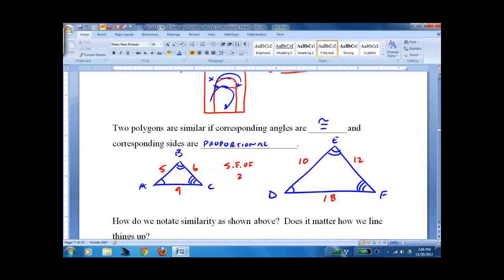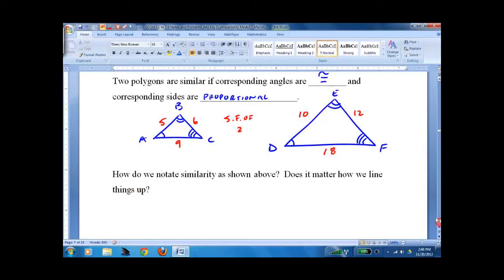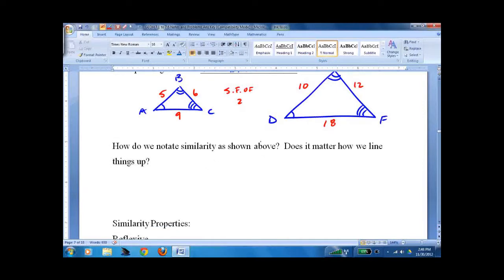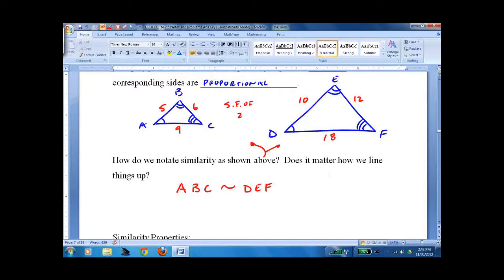That's pretty much it. That's how it works. It's not that hard, I hope. So how do we note this similarity? We do this: we say ABC is similar to DEF. And does it matter if we line them up? Oh yeah. So A is similar to D—those angles are congruent and those match up. B and E match up, and C and F match up. So this symbol means similar—it's like congruent without the equal part.